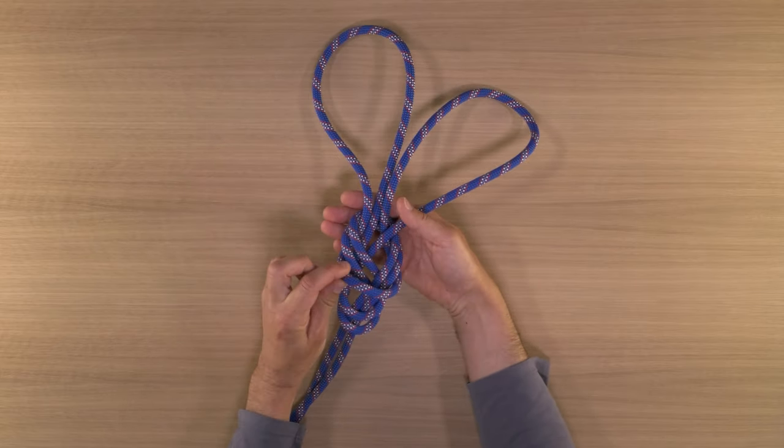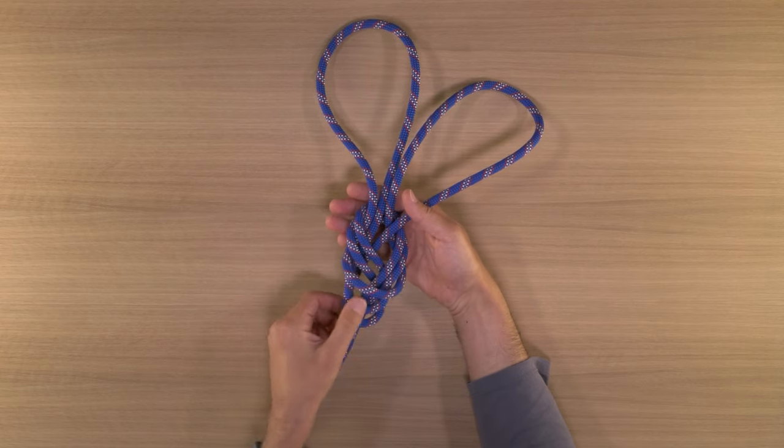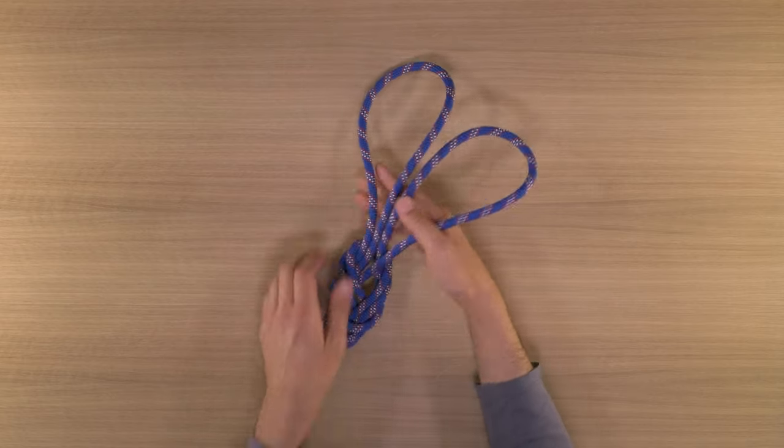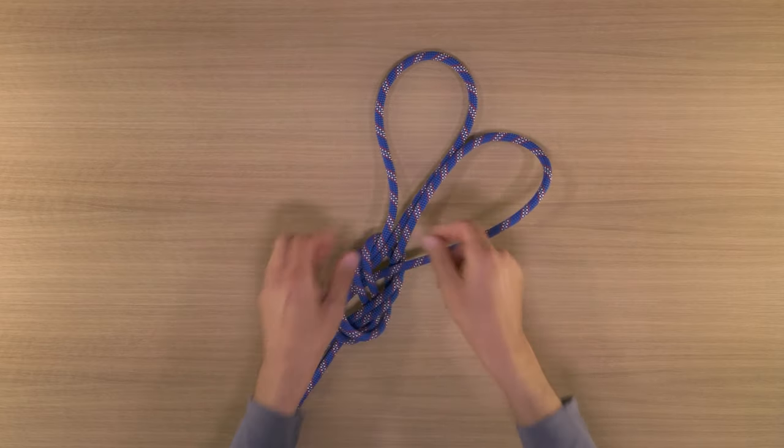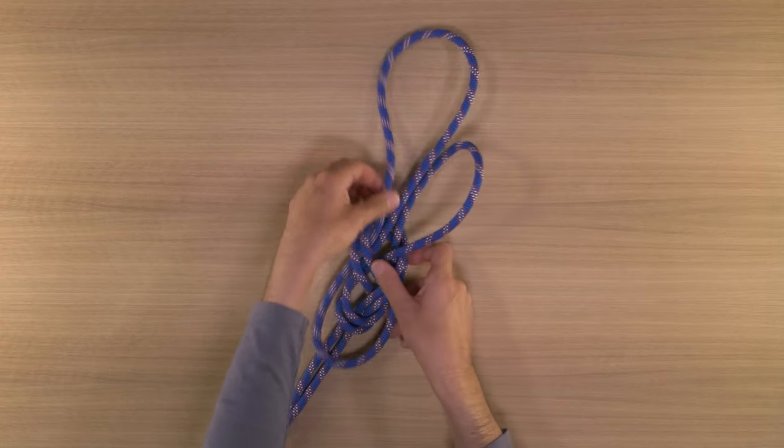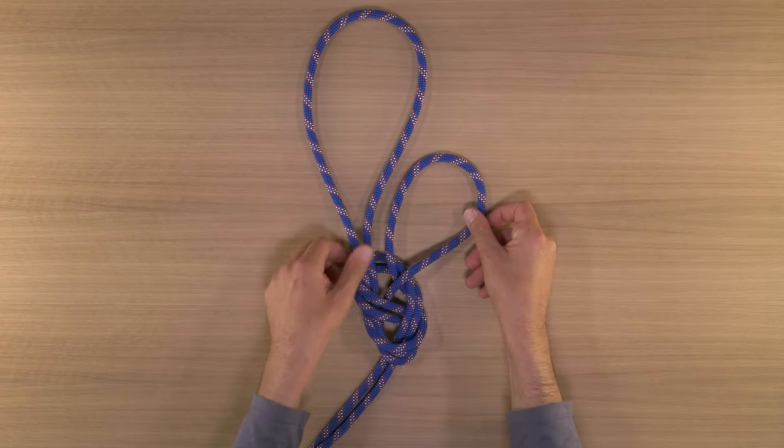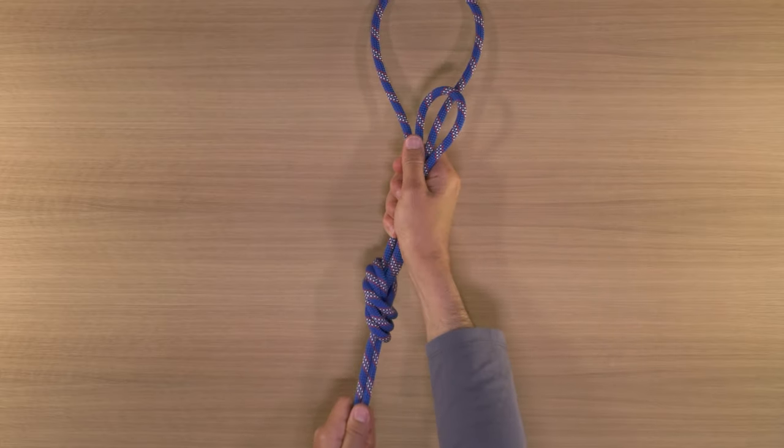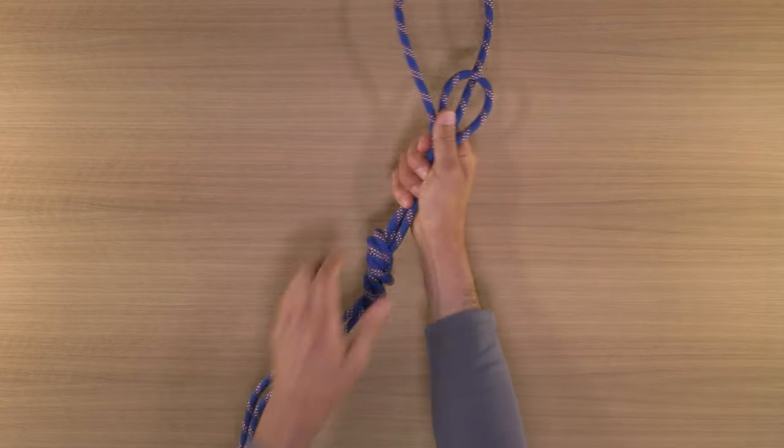Notice that the strand that you use to adjust the bunny ears, the strand that connects the two of them, should sit at the top of the three strands at the bottom of the knot. And this is a really useful knot in anchor building. I can use this to link two pieces of protection and make little adjustments to the equalization really easily. And as always, dress your knot neatly.